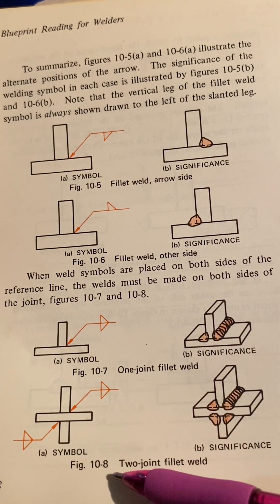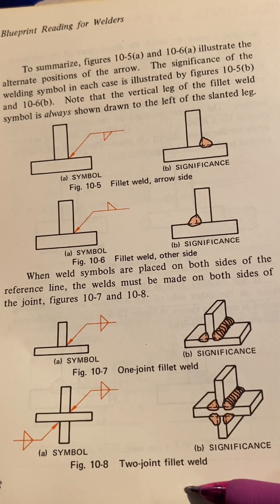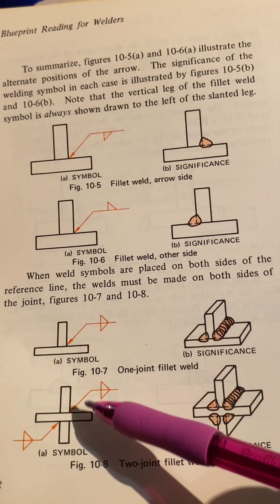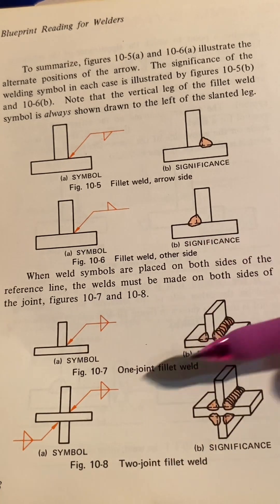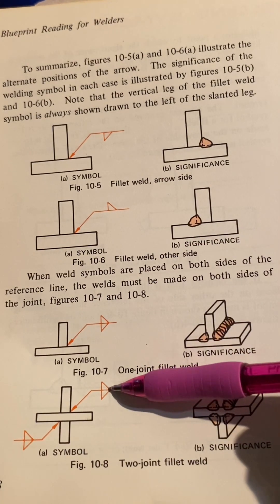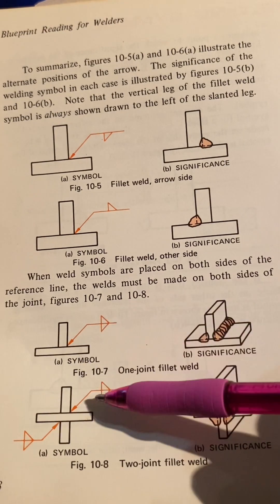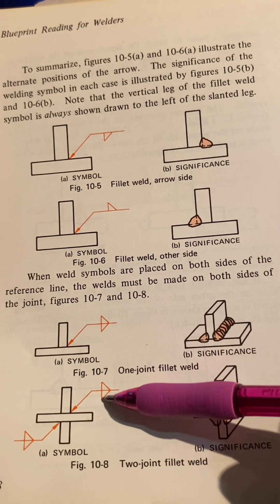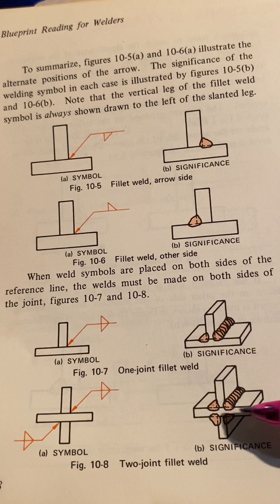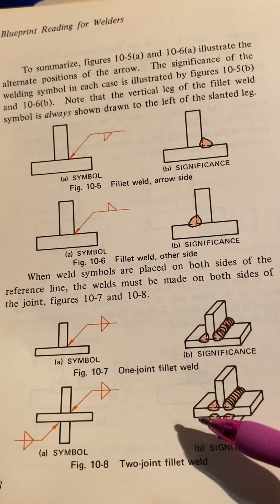Now, figure 10-8 shows two joint fillet welds. So here, what it says is, from the top, let's go to the top one first. It's pretty much simulating this one, right? But either way, that's the arrow. It wants two fillet welds, one on the arrow side, one on the other side. One on the arrow side, and then you have the other side.